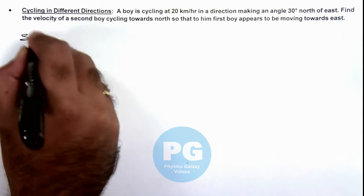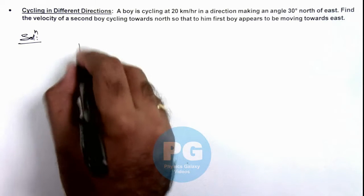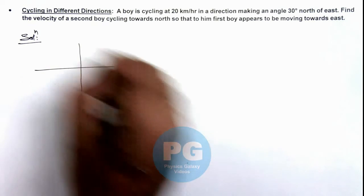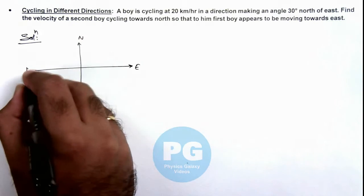Here we can simply draw the velocity vectors on the directions. If these directions are east, north, west, and south.